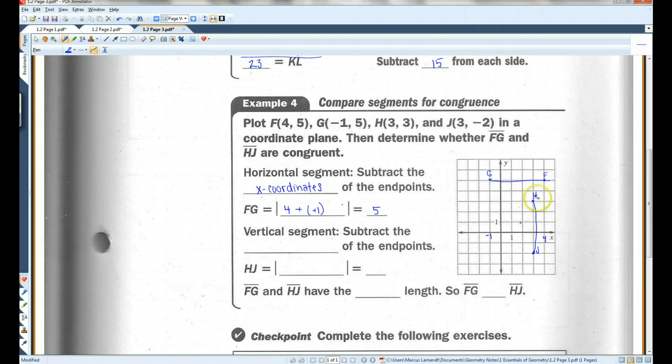The vertical segment - this is 3 and this is negative 2. I'm going to subtract the y-coordinates of the endpoints. So 3 minus negative 2, once again minus negative becomes positive.